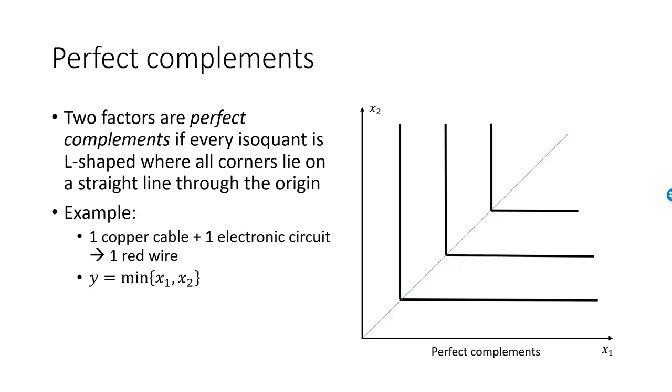In this example, the straight line connecting the corners of the isoquants has a slope of one, but that is not a requirement for factors to be perfect complements. If the production factors are perfect complements, then the firm cannot make any sort of substitutions between the factors. They must always use the production factors in a fixed ratio.